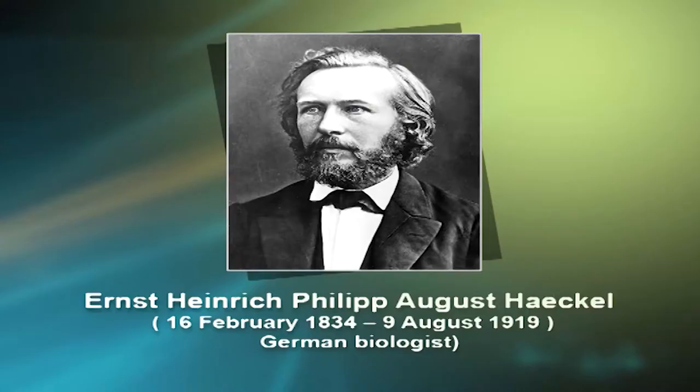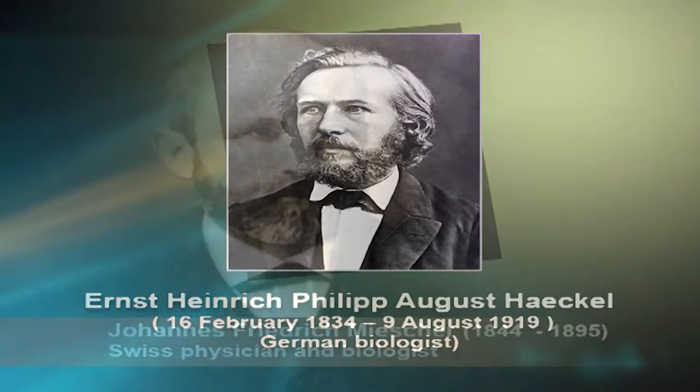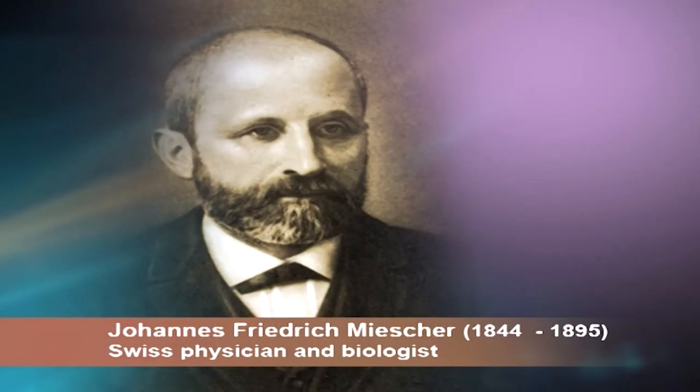Research in the 19th century was often performed in isolation, with the findings made by one not known to others. While Mendel was concluding that inheritance was particulate in nature, others were trying to figure out the physical nature of the particle. Heikel correctly predicted that the hereditary material was located in the nucleus. Meischer showed the material in the nucleus was a nucleic acid. Others observed the behavior of chromosomes and suggested they had a role in heredity.